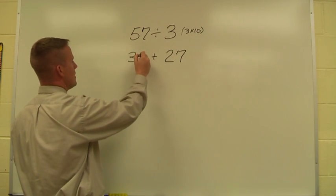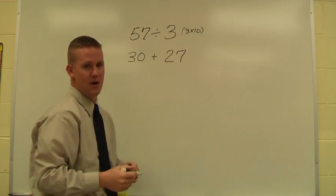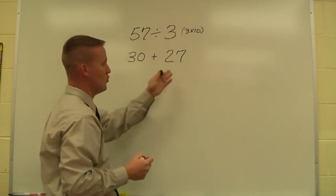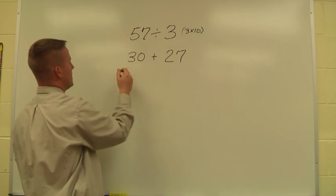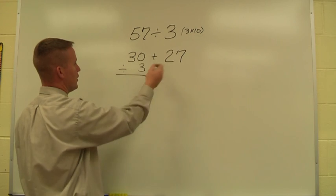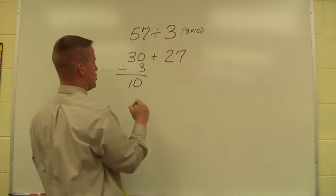So now I have a number that is the same as 57, but both numbers now are a lot easier to work with because my three times tables I do know up to these numbers. So on this side I think what is 30 divided by 3, and I already know it's 10 because that's how I got it originally.